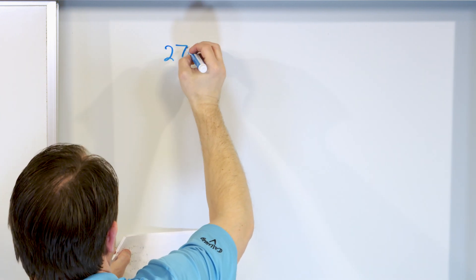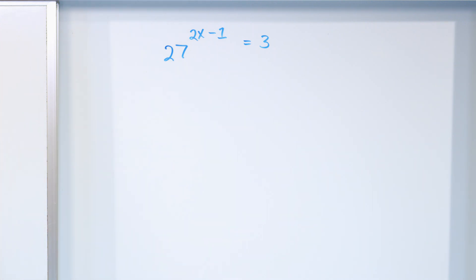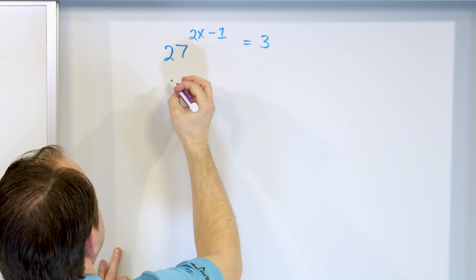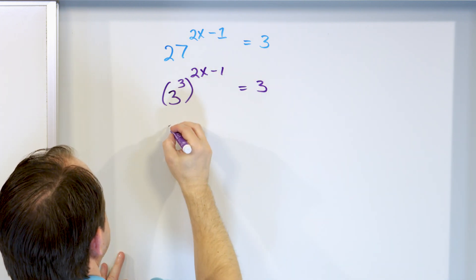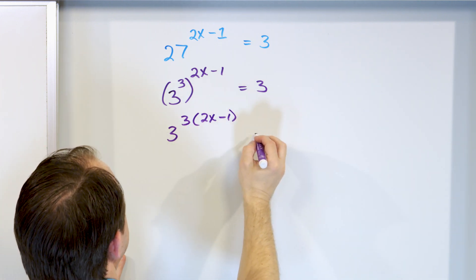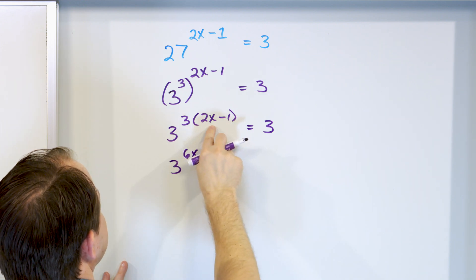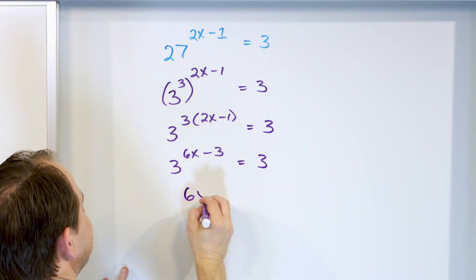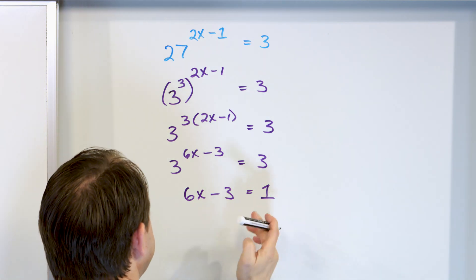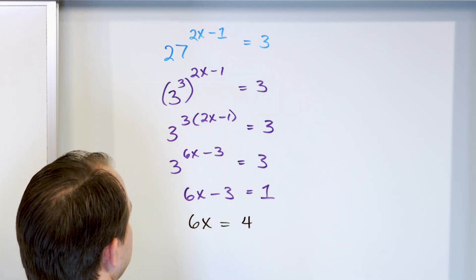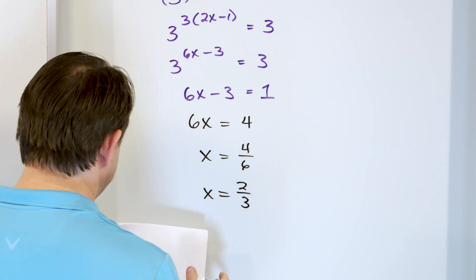Final example: 27 to the power of (2x minus 1) equals three. We write 27 as three to the power of three, with exponent (2x minus 1). Multiplying: three times (2x minus 1) gives 6x minus 3. So three to the (6x minus 3) equals three to the first. Setting exponents equal: 6x minus 3 equals one. Adding three gives 6x equals four, and dividing by six gives x equals four-sixths, which simplifies to two-thirds. That's the final answer.